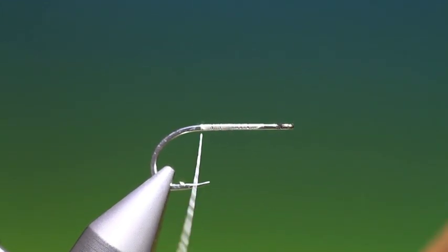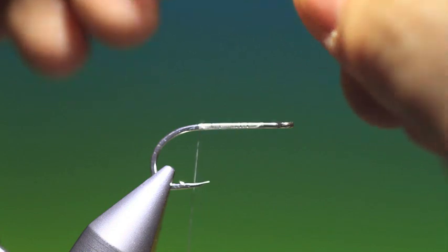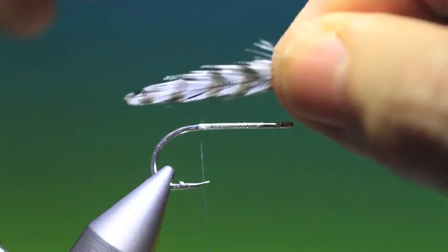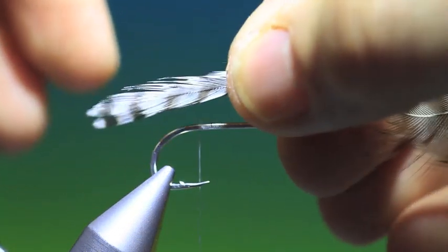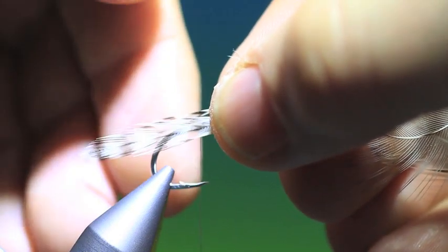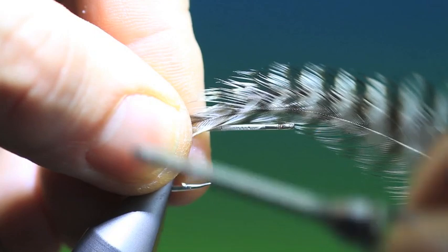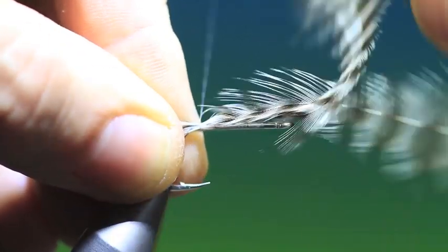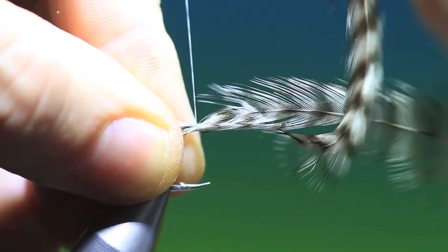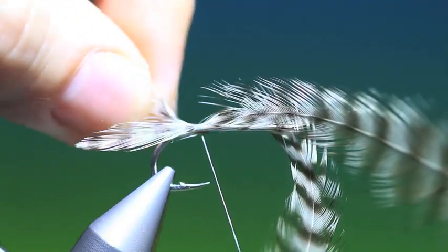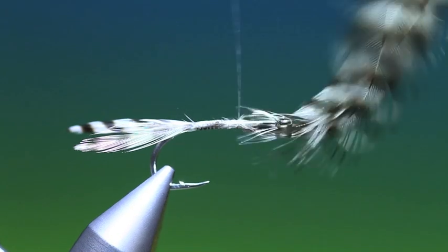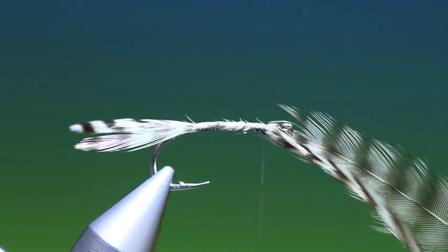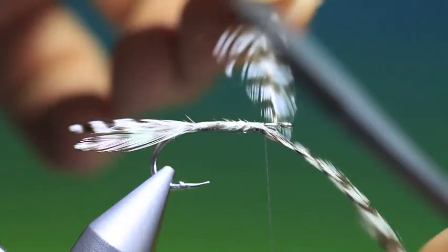So we'll just attach our tying thread, then what we need is two grizzly hackles approximately the same size. We want these the same length and we place them about a hook length out, hold them in position. Then we can go back, just attach this to the hook shank. Don't have to be neat here. Let's get rid of these two.